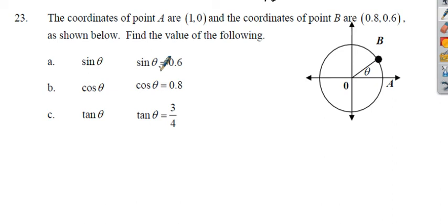Sine of theta is always the y value. If this is x, y, you know that x is the cosine value and y is the sine value. So sine of theta equals 0.6, and cosine of theta equals 0.8.